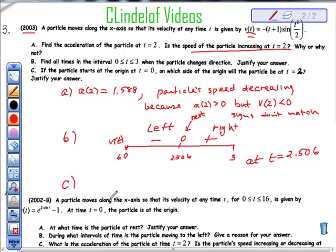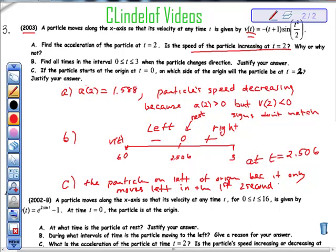It says if the particle starts at the origin at t equals 0, on which side will it be at t equals 2? Well, the particle will be on the left, on left of origin, because it only moves left in the first two seconds. See graph above, and that's my answer.